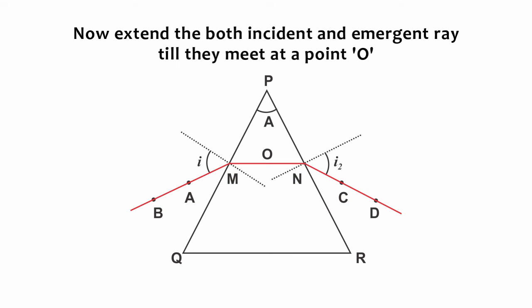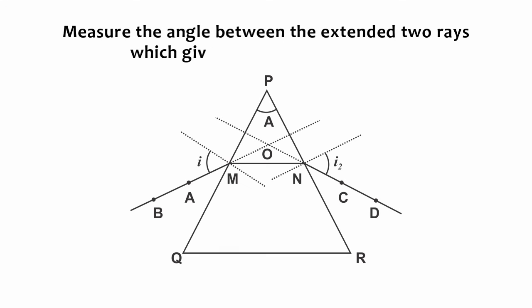Now extend both incident and emergent rays till they meet at a point O. Measure the angle between the extended two rays which gives the angle of deviation, D.